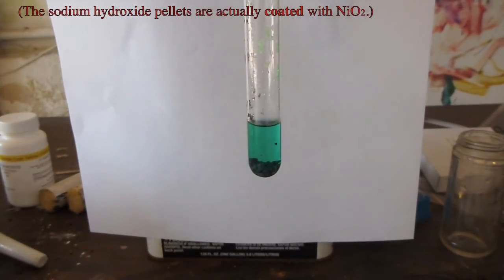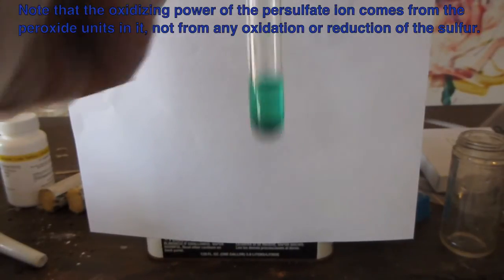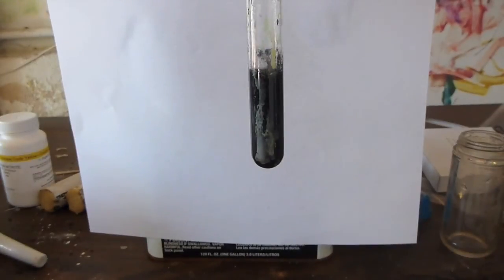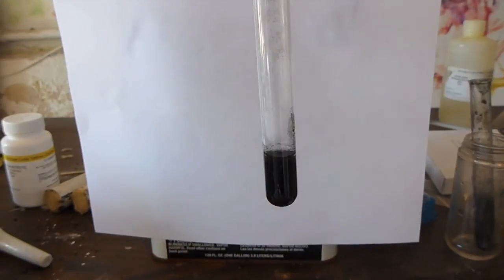This is the oxide. Now as I heat the test tube, and I apologize for the blurriness of the camera at this point, you see that there's quite a bit more of this oxide formed. So this is nickel 4 oxide, or nickel dioxide.